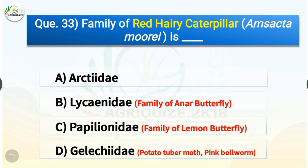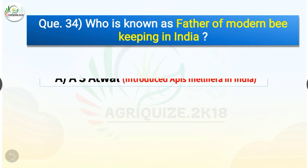Question number thirty-three: family of red hairy caterpillar is — options are Arctiidae, Lycanidae, Papilionidae, or Gelechiidae. The correct answer is option A, Arctiidae. Lycanidae is the family of anar butterfly, Papilionidae is the family of lemon butterfly, and Gelechiidae is the family of potato tuber moth and pink bollworm.